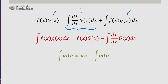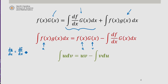In practice, you may see this expressed as the integral of u dv equaling u times v minus the integral of v du, with f of x being u and capital G of x being v. With u being f of x, du/dx is equal to df/dx, which is also expressed as f prime of x. And g of x is the derivative of capital G of x, so dv/dx is equal to g of x.